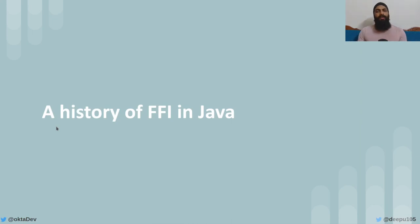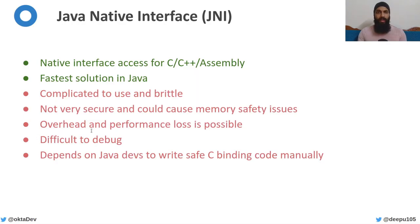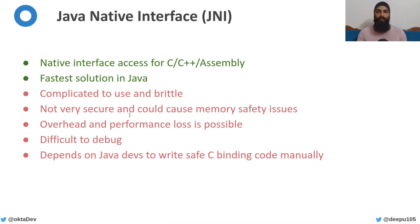Let's look at the brief history of foreign functions in Java. The standard for FFI in Java for a long time is JNI, which is Java Native Interface. Honestly, it's notorious for being problematic. If you are used to other languages like Rust, Go, or Python, you will probably know how easy and intuitive FFI is in them, which leaves something to be desired in the Java world because of how convoluted and complex JNI is.